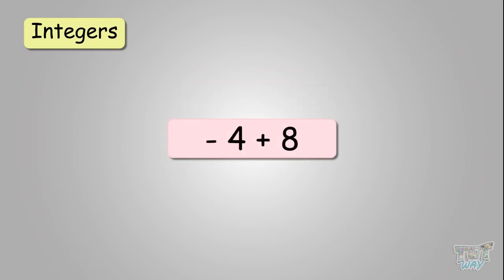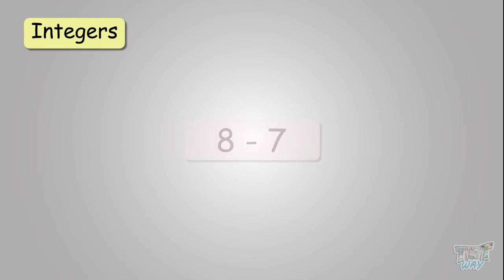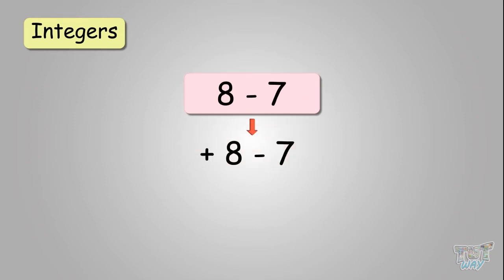Next: minus four plus eight. You have two different signs, so you will be doing subtraction, and the answer will get the positive sign because the bigger number is positive. So the answer will be four. Then eight minus seven — you have two opposite signs, so you subtract. Positive eight minus seven will be positive one, because the larger number is positive.